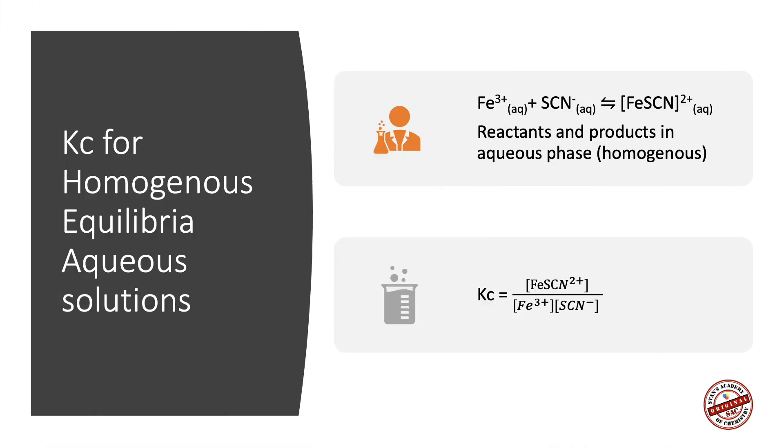KC for homogeneous equilibria involving aqueous solutions. Here, the reactants are both aqueous and the product is also aqueous. [FeSCN]²⁺ is a brown colored solution. Fe³⁺ is a colorless solution in extremely dilute concentrations, so is SCN⁻.